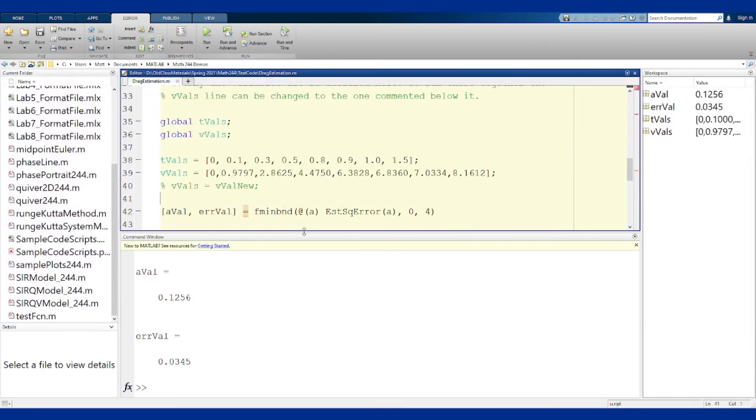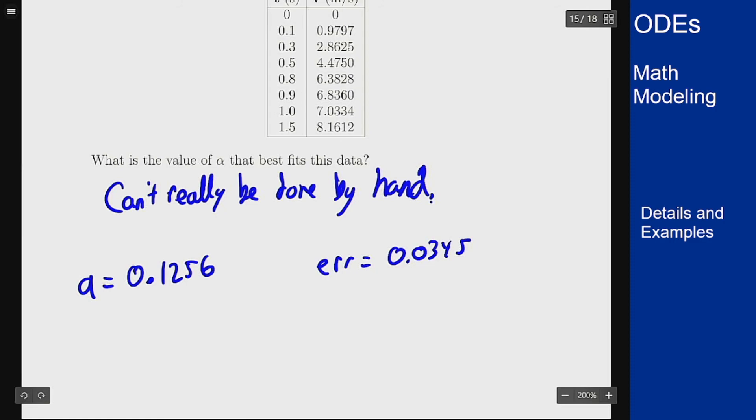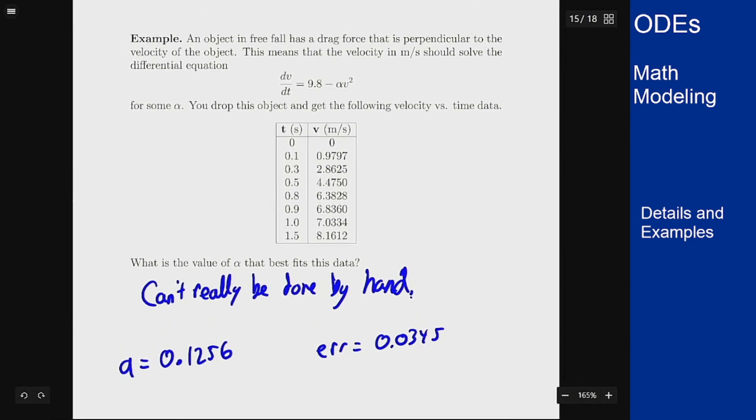The best a value is a = 0.1256. That is the value of a for the coefficient in the equation that best fits the data. The resulting error was 0.0345. If I want to best fit this data, I should pick this value for the alpha in my equation. I can then take this a value and use it as the drag coefficient for this object in other experiments.